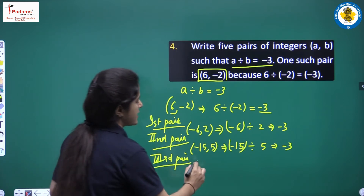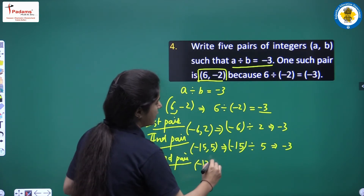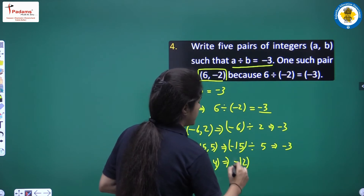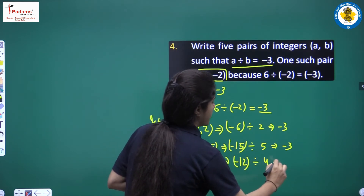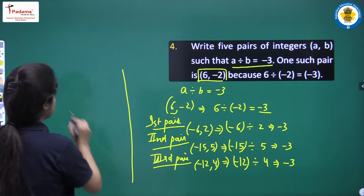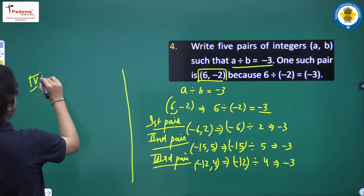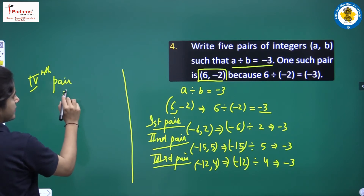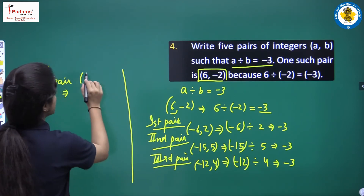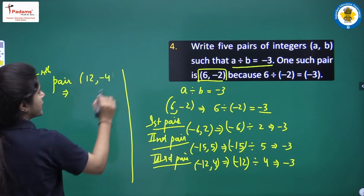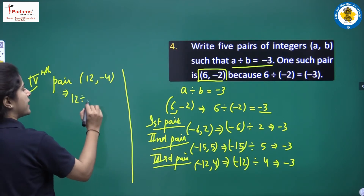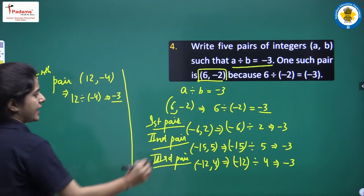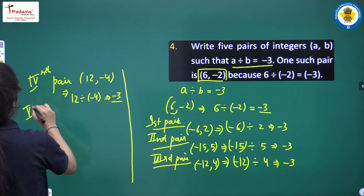The third pair: we can take (-12, 4), so minus 12 divided by 4 equals minus 3. The fourth pair: we can take (12, -4), so 12 divided by minus 4 equals minus 3.